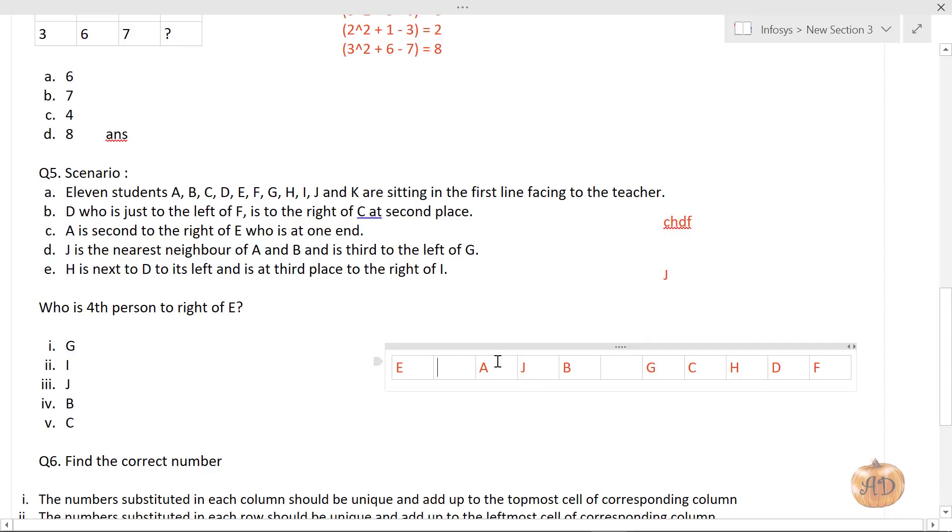This completes the seating arrangement. The remaining alphabet is K, so K sits here. The question asks who is fourth person to the right of E. Fourth person is first, second, third, fourth - it's B. The answer is B.